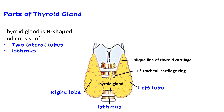Now let us briefly revise the parts of thyroid gland. Here we can see the thyroid gland — it has two lateral lobes and an isthmus which connects these lobes, the right lobe with the left lobe. I have described in detail the gross features, relations, and applied anatomy of the thyroid gland in another video; I will put the link in the description box.